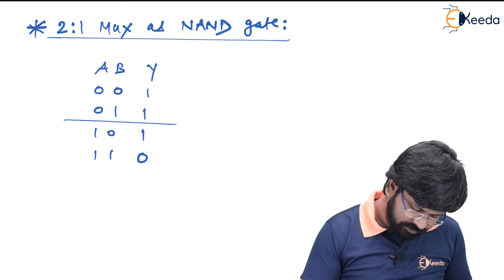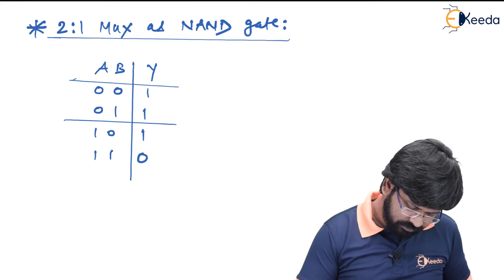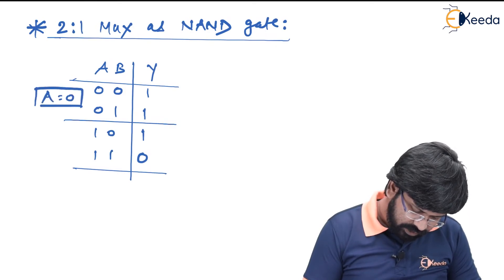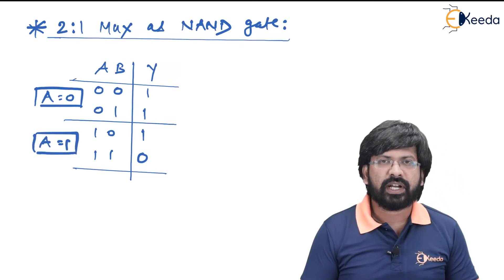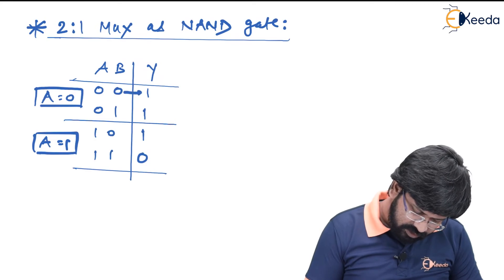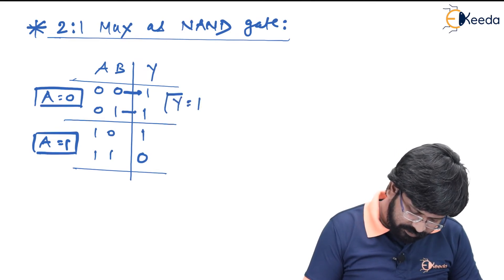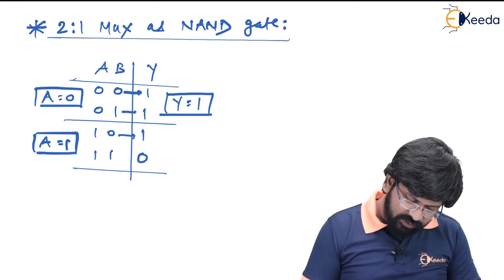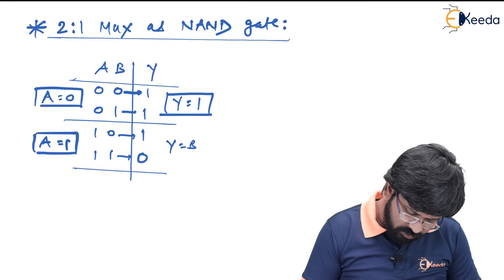I will make the same partition. For the first two combinations A is commonly 0, and for the last two combinations A is commonly 1. We get Y in terms of B for every combination of A. For A equal to 0: when B is 0, Y is 1; when B is 1, Y is 1 — Y is independent of B and Y is always equal to 1. For A equal to 1: when B is 0, Y is 1; when B is 1, Y is 0 — Y is the complemented version of B, so Y is equal to B bar.